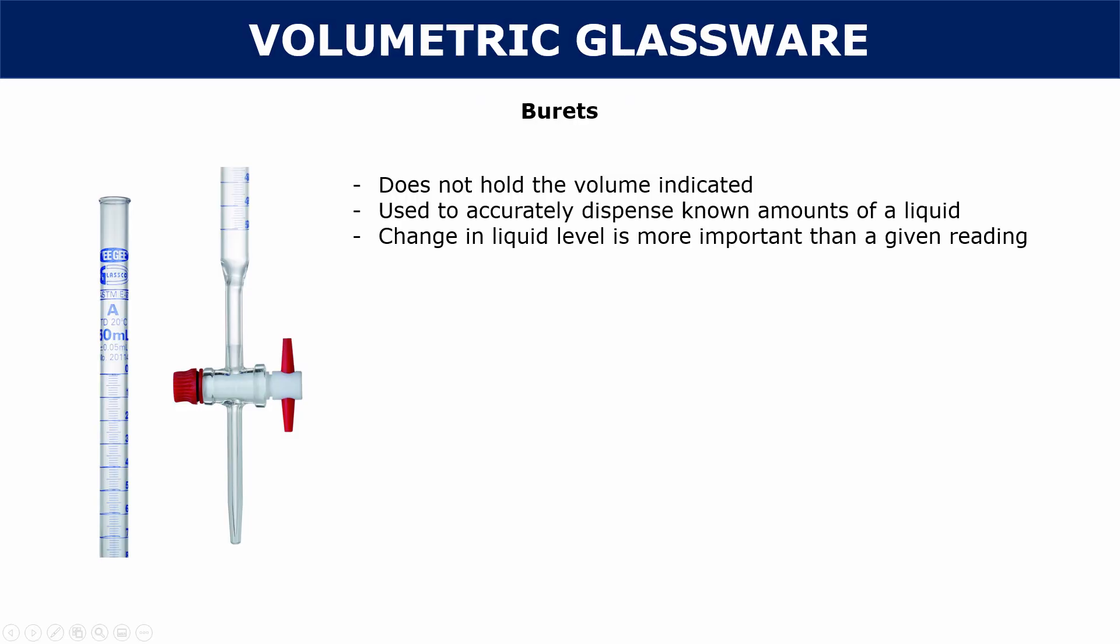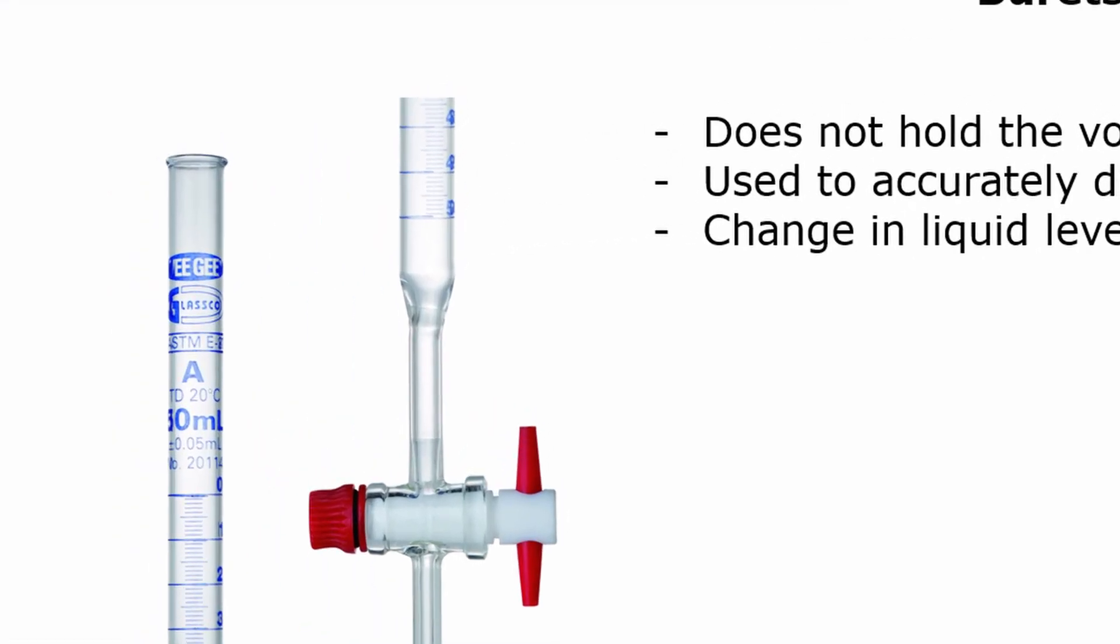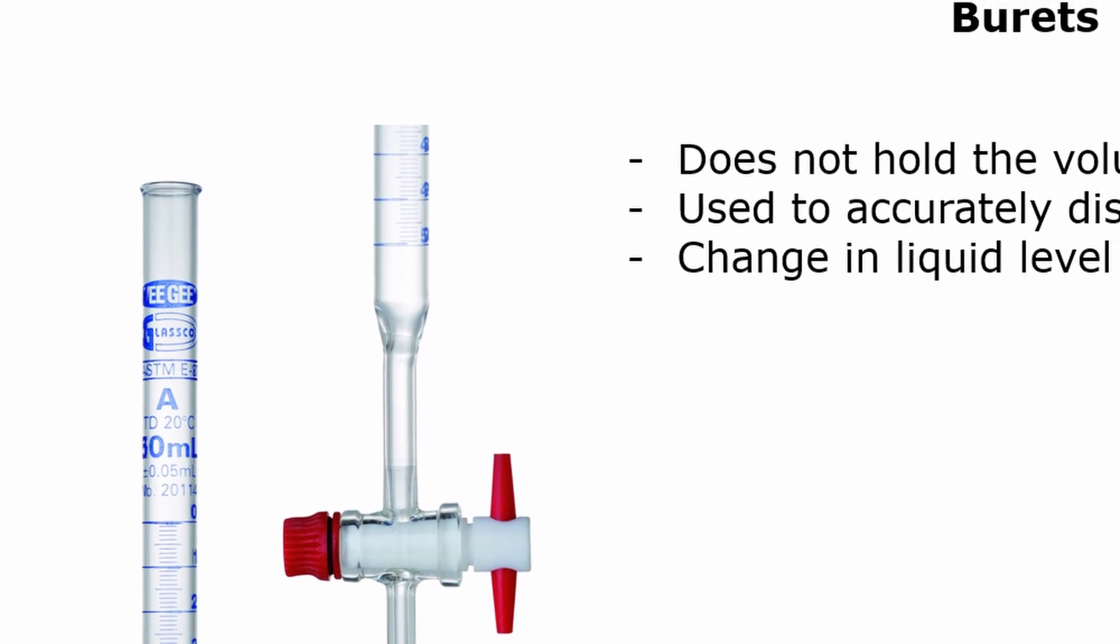Let's look at burettes. Burettes don't actually hold the volume indicated. Burettes are usually used in titrations. Like we saw before, burettes don't really use the typical numbering. In a buret, you start off at the top. If you look at this picture here, at the top, you have 0 mils. And at the bottom, you're going to have the highest mils. So this one is 50 mils. If you notice, it doesn't really make sense.